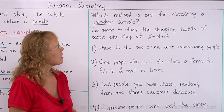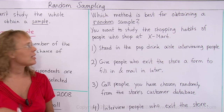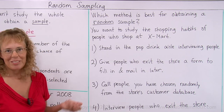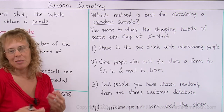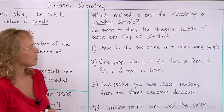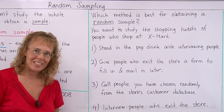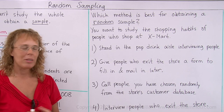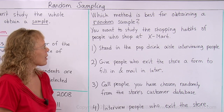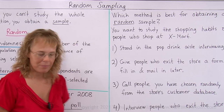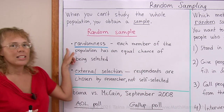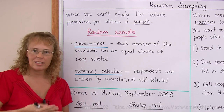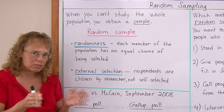Now let's study which method is best for obtaining a random sample. Let's say you want to study the shopping habits of people who shop at a store called Xmart. Here are a few methods you could use to obtain your sample, since you cannot interview all the people who come to the store. One option: stand in the pop drink aisle interviewing people and asking them about their shopping habits. But is it truly going to be a random sample? Does each person who shops in that store have the same chance of being selected if you are standing in the pop drink aisle?